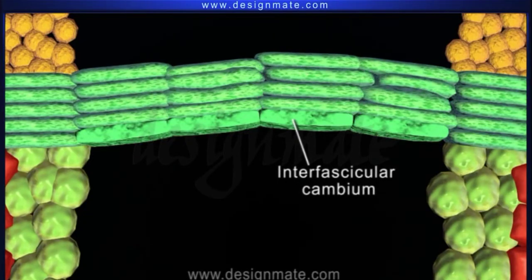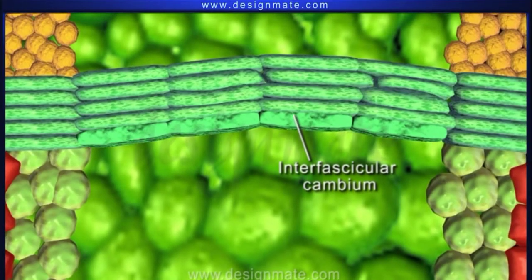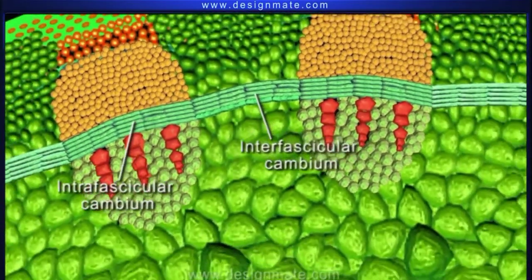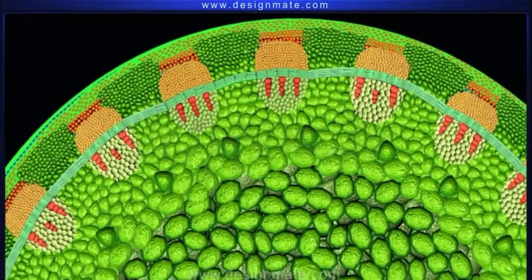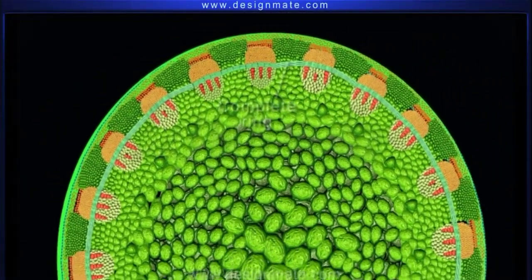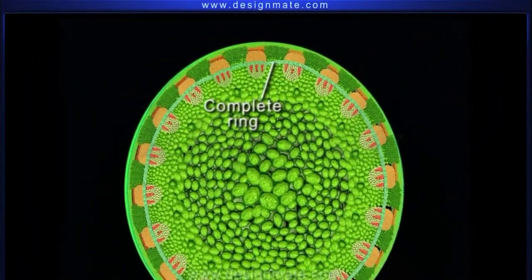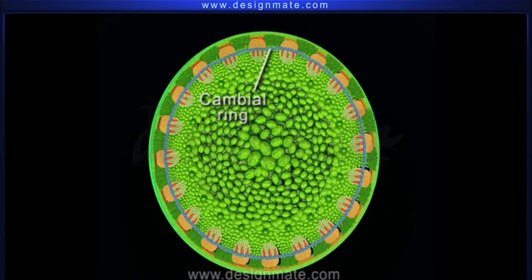This interfascicular cambium joins the intrafascicular cambium on both sides and forms a complete ring of vascular cambium called the cambial ring.